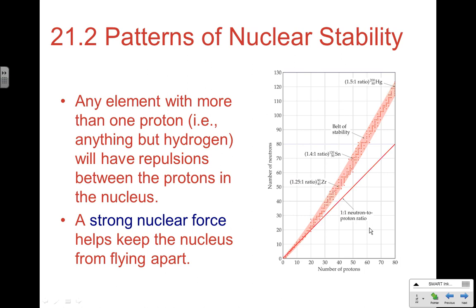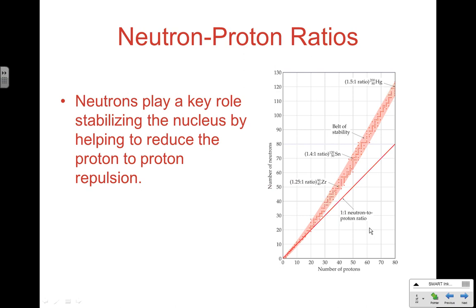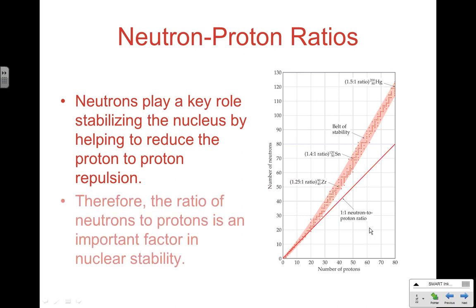In order to overcome those repulsions and hold particles together in the nucleus, we need a very strong force — the strong nuclear force — which keeps our nucleus from flying apart. Neutrons play a key role in stabilizing the nucleus by helping reduce proton-to-proton repulsion. As neutrally charged particles, neutrons add separation between protons, giving them a stabilizing effect. Therefore, the ratio of neutrons to protons is a really important factor when looking at nuclear stability.